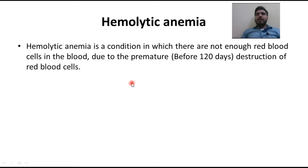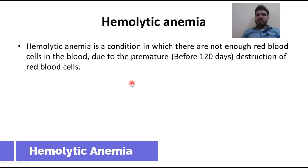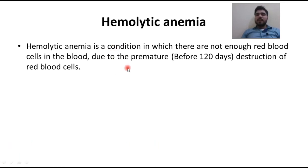Further, proteins from our liver help in maturation. When red blood cells in our body are not mature — they are premature — this can be due to some autoimmune disorder or some infection. One red blood cell should contain three hundred million hemoglobin molecules.